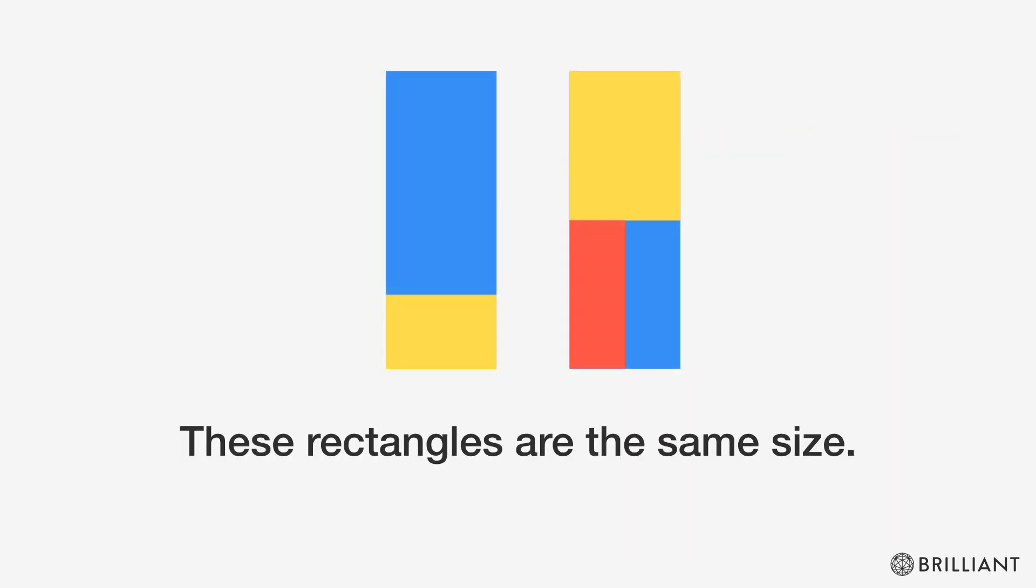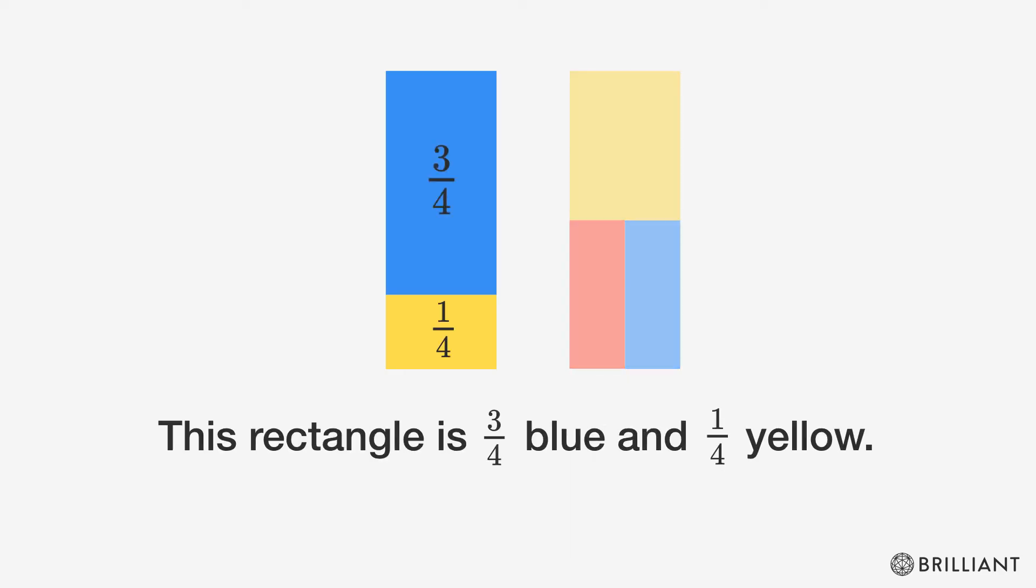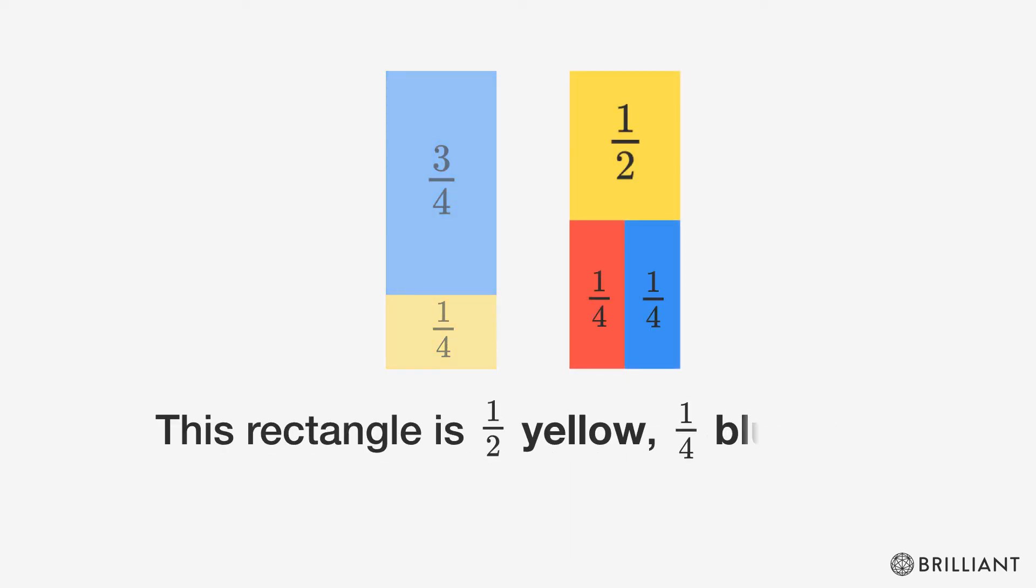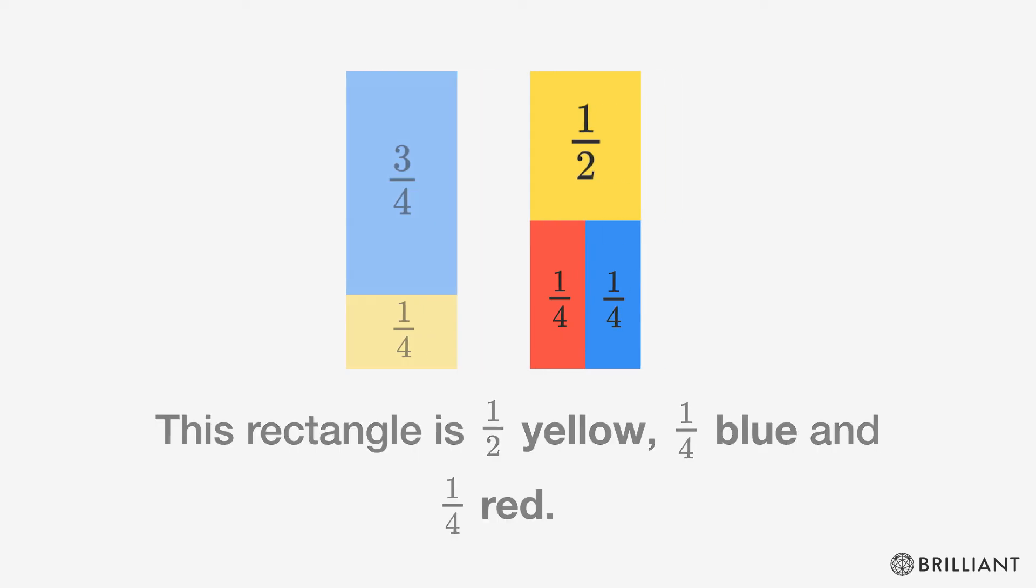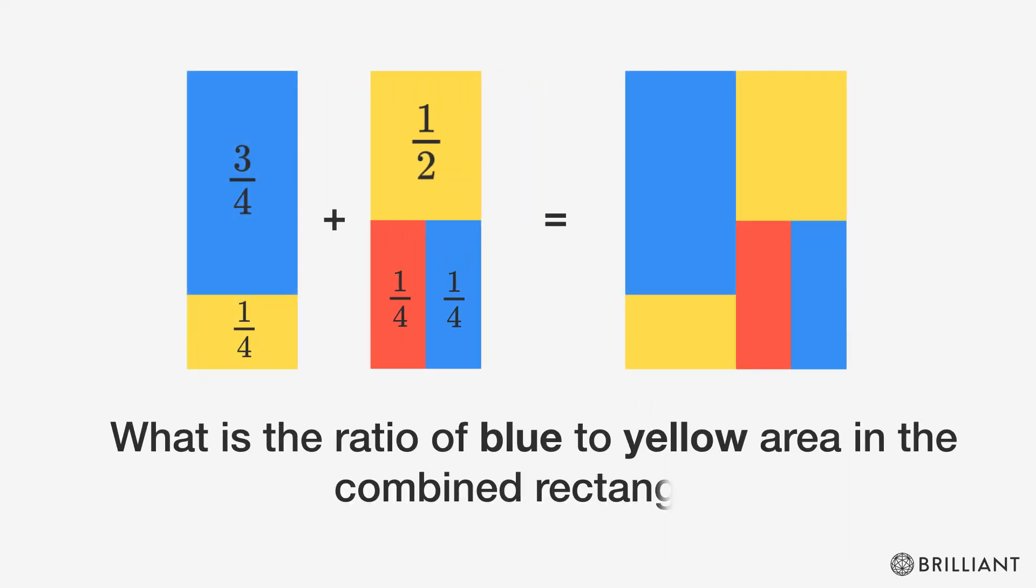Let's try something more abstract. These rectangles are the same size. This rectangle is three-fourths blue and one-fourth yellow. And this rectangle is a half yellow, a fourth blue, and a fourth red. What is the ratio of blue to yellow area in the combined rectangle?